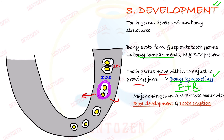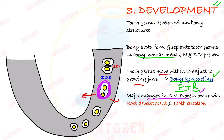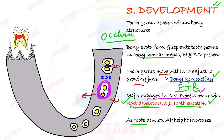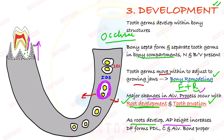The major changes in alveolar process occur when the roots of the teeth develop and the teeth start to erupt. When the roots develop, the alveolar process increases in height. The dental follicle cells start forming periodontal ligaments, cementum, and alveolar bone proper. These PDL fibers get attached to the bone and that is how alveolar bone forms. In strict sense, it develops only during the eruption of teeth.